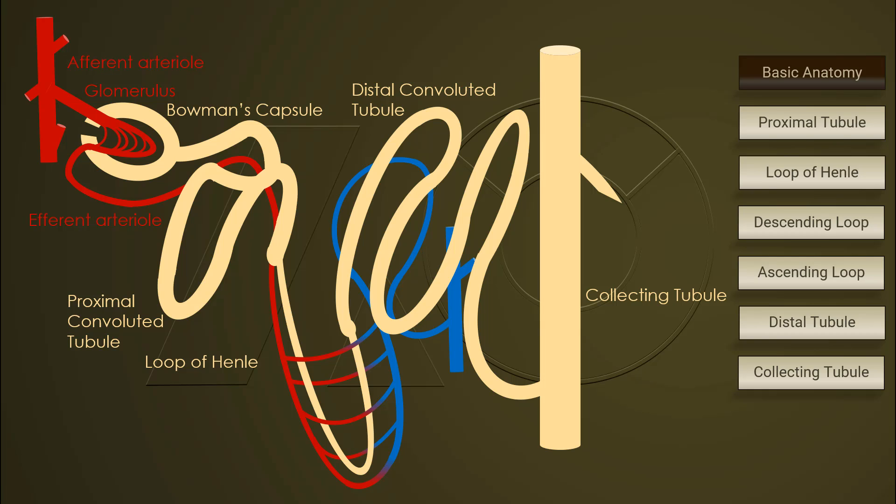Loop of Henle can be further divided into descending loop of Henle and ascending loop of Henle. Now let's discuss each part of the nephron, finding out the movements of cations and ions and what different diuretics work at different segments of a nephron.